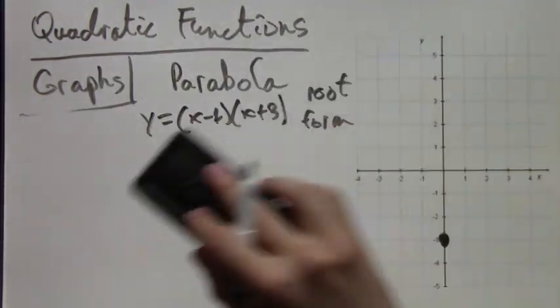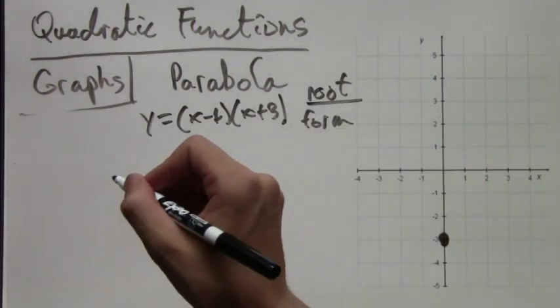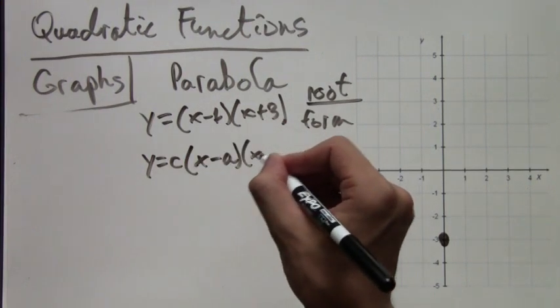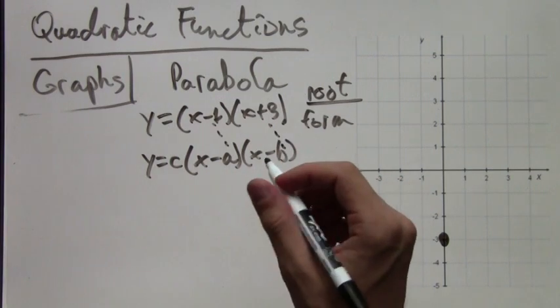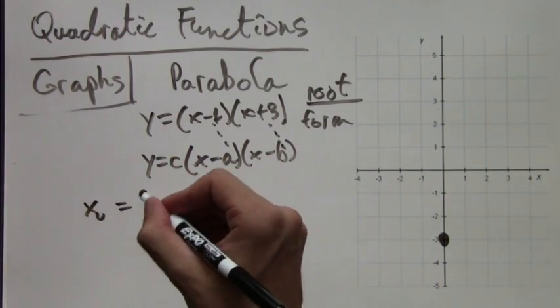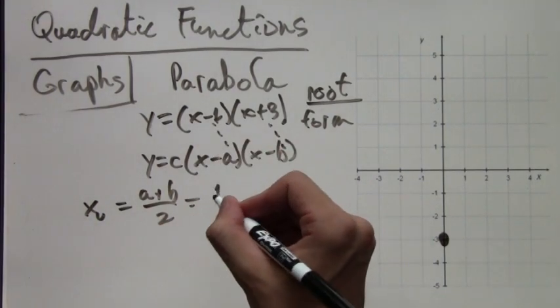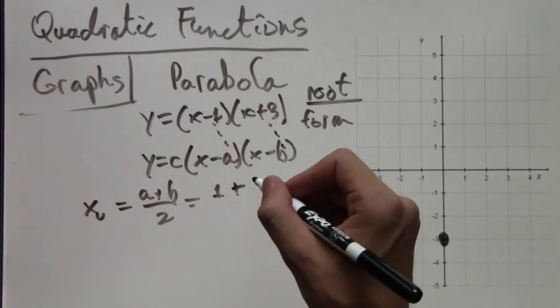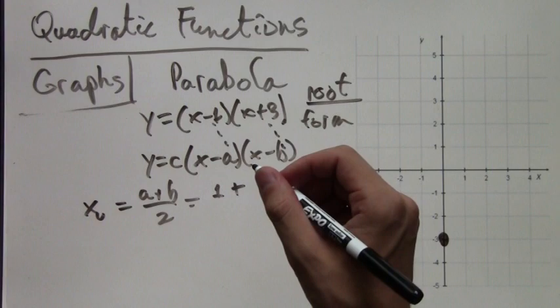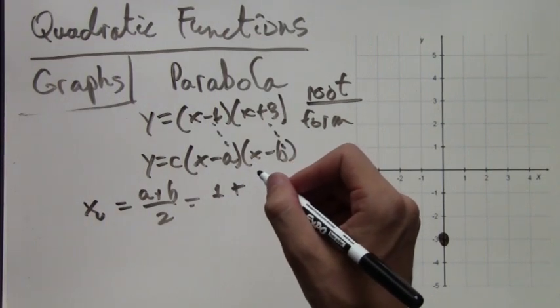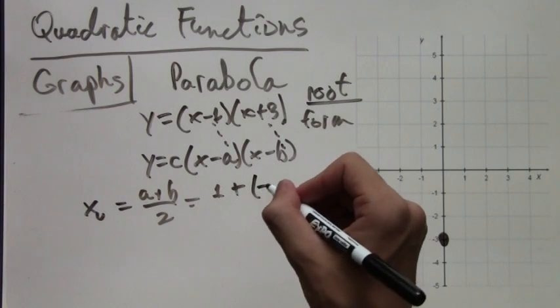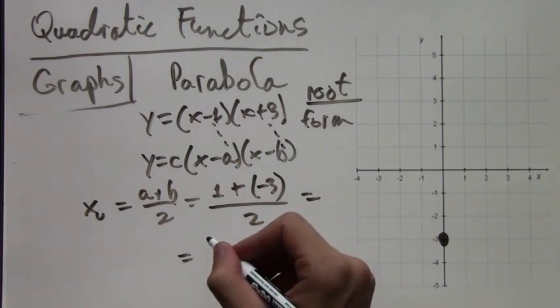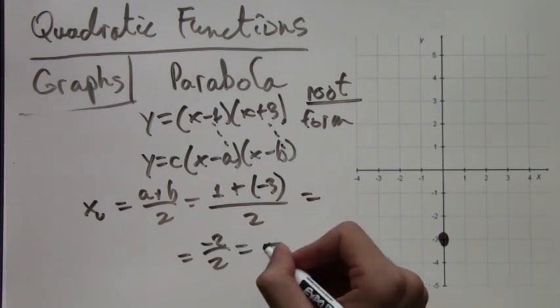Now we need the vertex. Since we have the root form of the quadratic function, this is how we find the vertex. In general, we have (x - a)(x - b), and the vertex x-coordinate is (a + b) / 2. We have 1 plus negative 3. Because it's x minus b, our x plus 3 is the same as x minus negative 3. So we add negative 3. In other words, the sign is flipped. We get negative 2 over 2, which is negative 1.